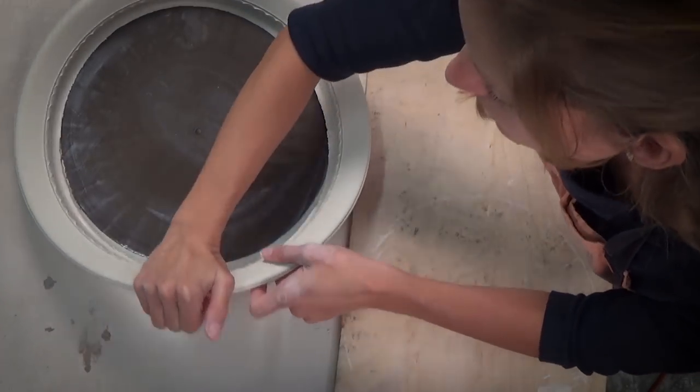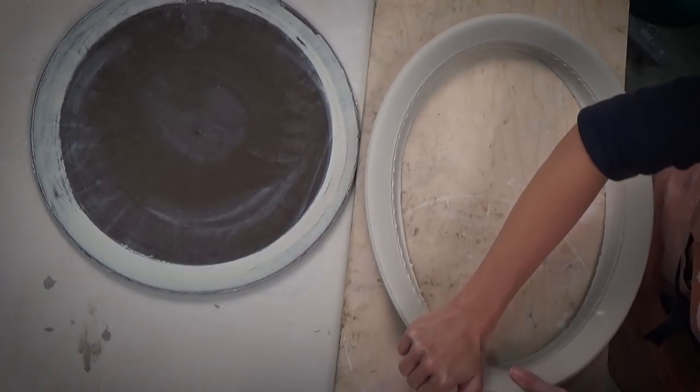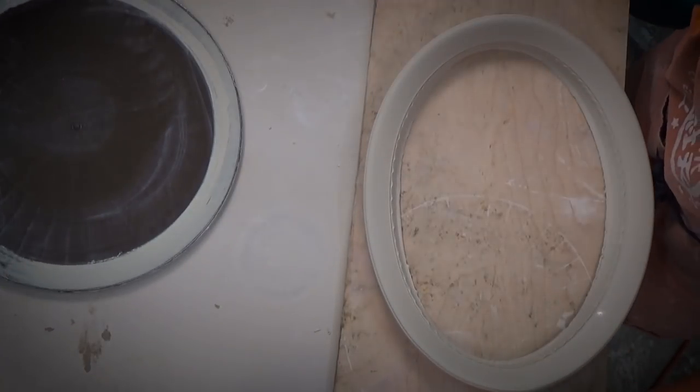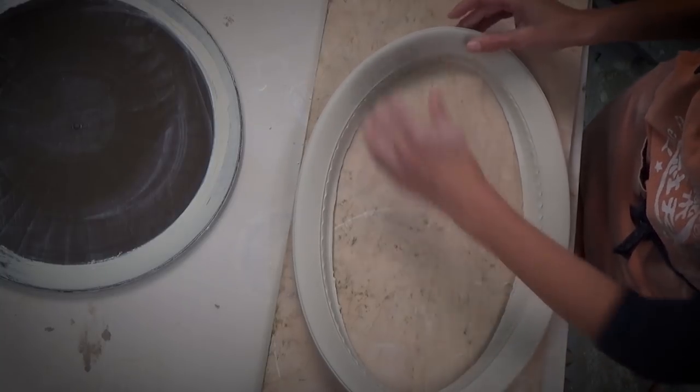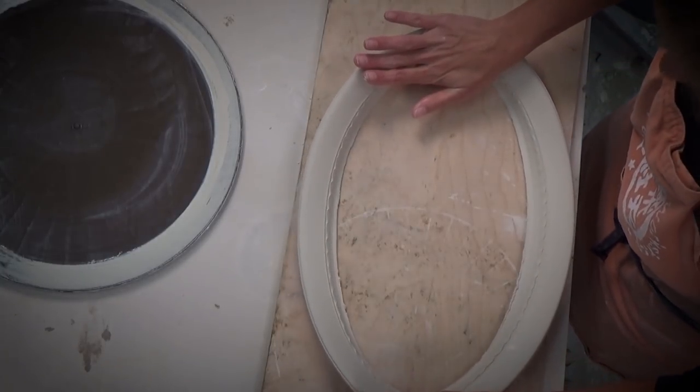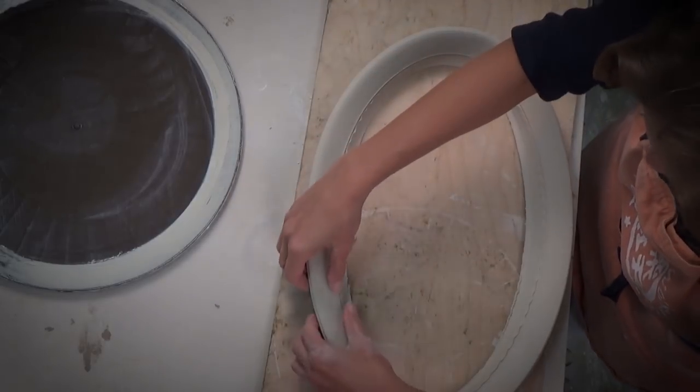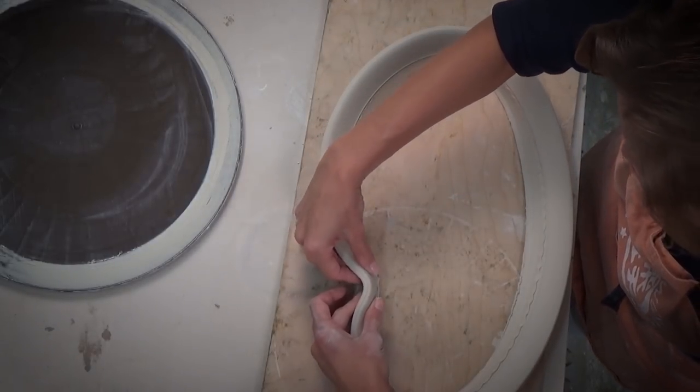You're going to lift from one side and place on your board. I usually do an oval shape. It has a little lift, a little bend here.